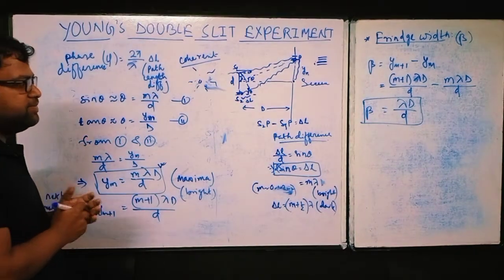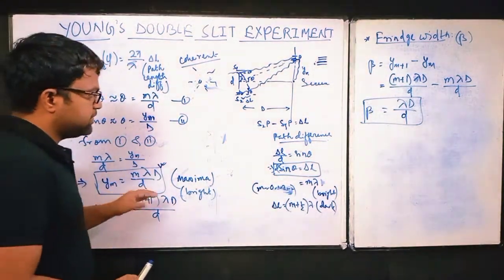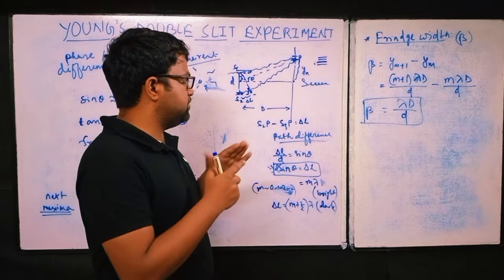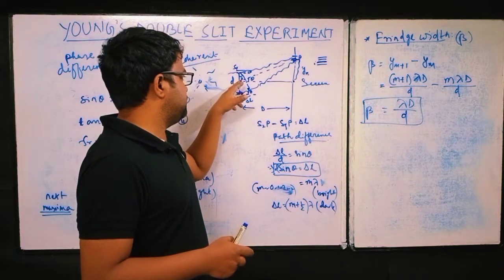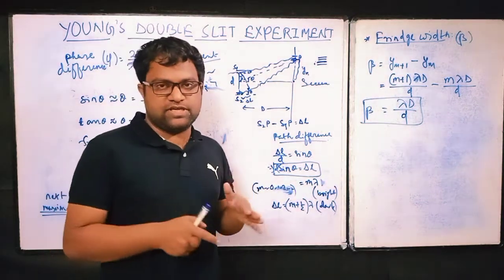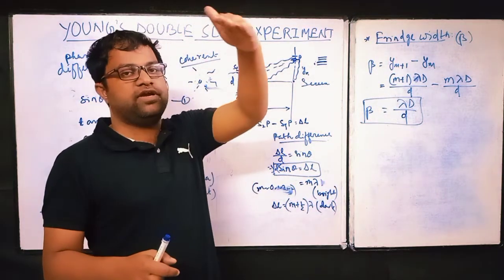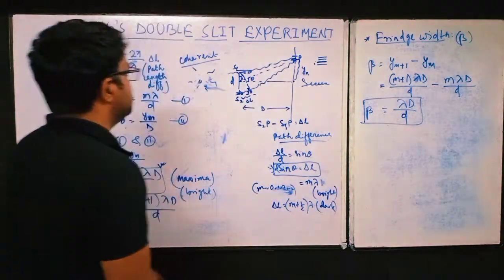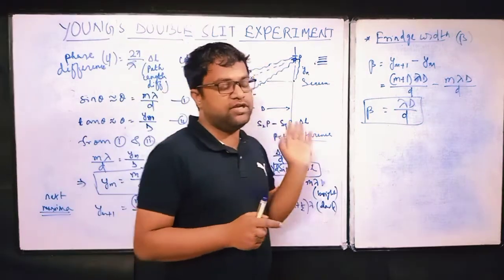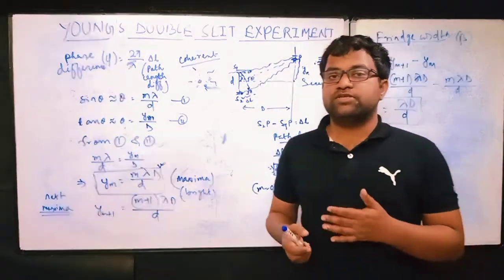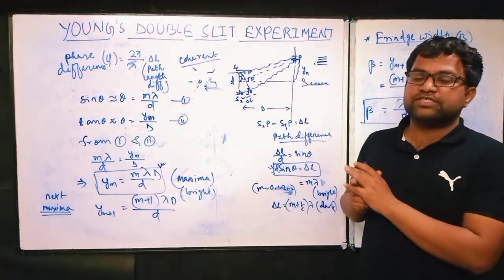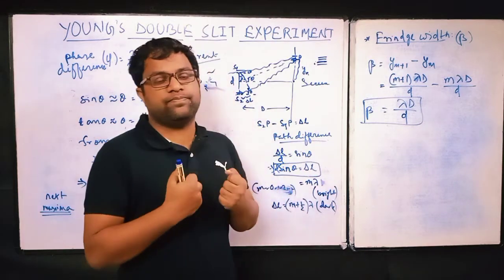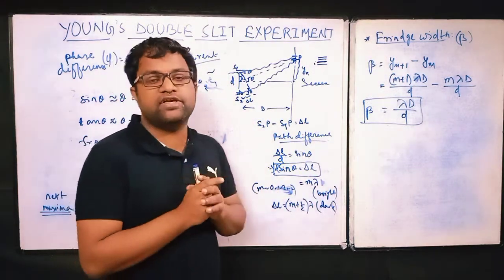This is Young's double slit experiment. It tells us where maxima and minima occur from the midpoint of the slits to points on the screen. Most importantly, the experiment provides experimental verification of the wave nature of light.